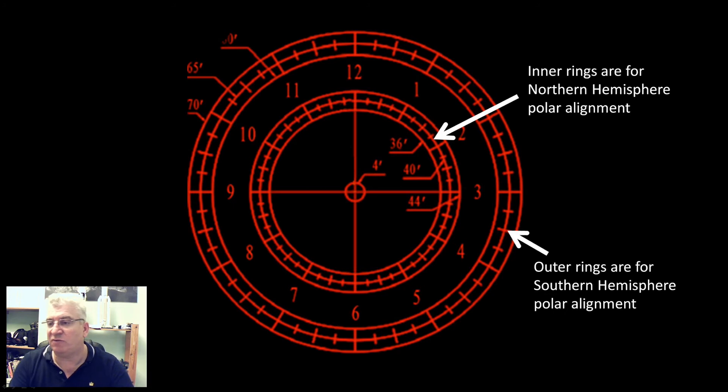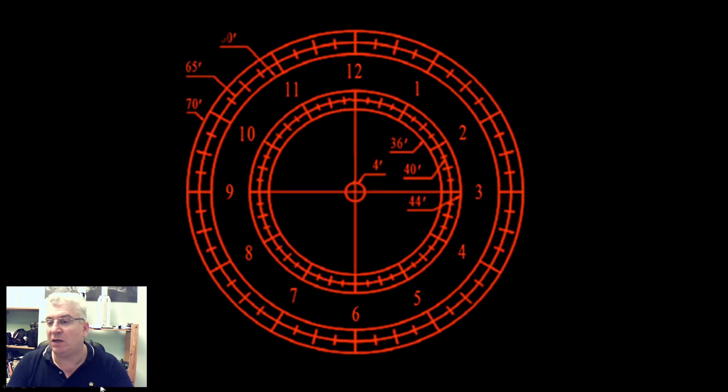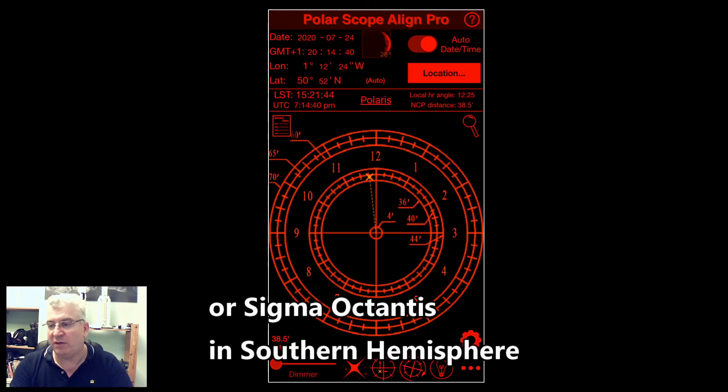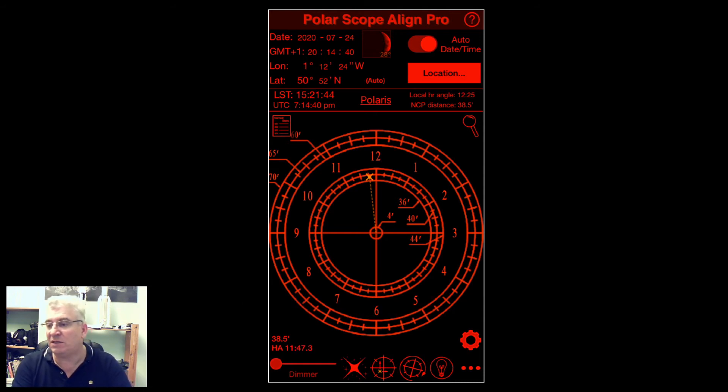This is what the graticule looks like in the polar scope eyepiece of the Skyguider Pro. Essentially a set of concentric rings and a crosshair in the middle. What we need to do is use an app. I use an app called Polarscope Align Pro on my phone, which tells me for a given location, date and time, where Polaris should be for the right ascension axis of the mount that will be pointing at the north celestial pole. This cross is showing where Polaris needs to be at 20:14 and 40 seconds on the 24th of July 2020 from my location.